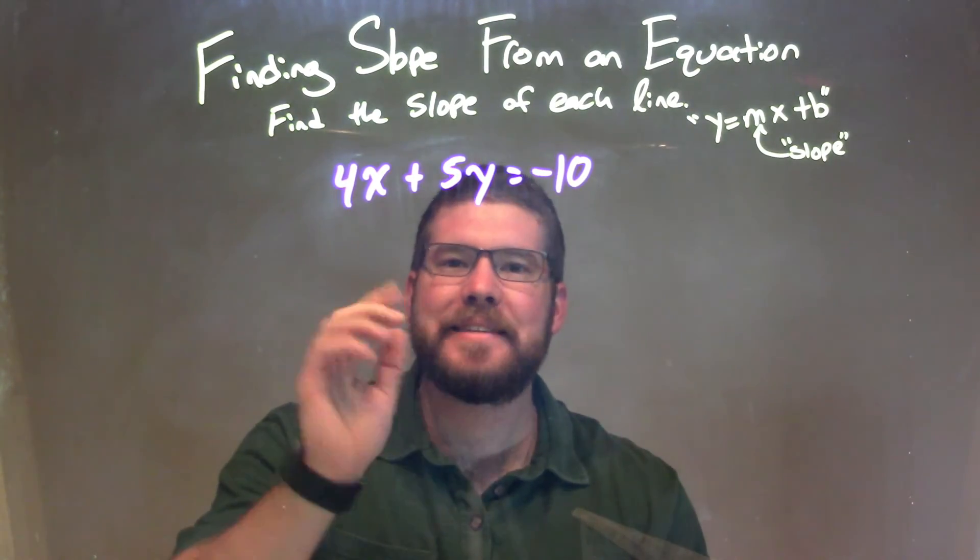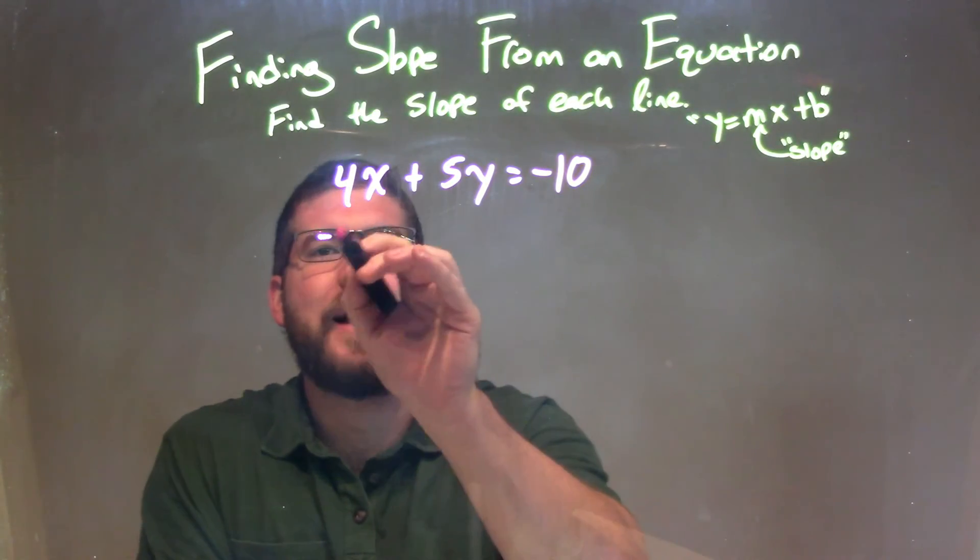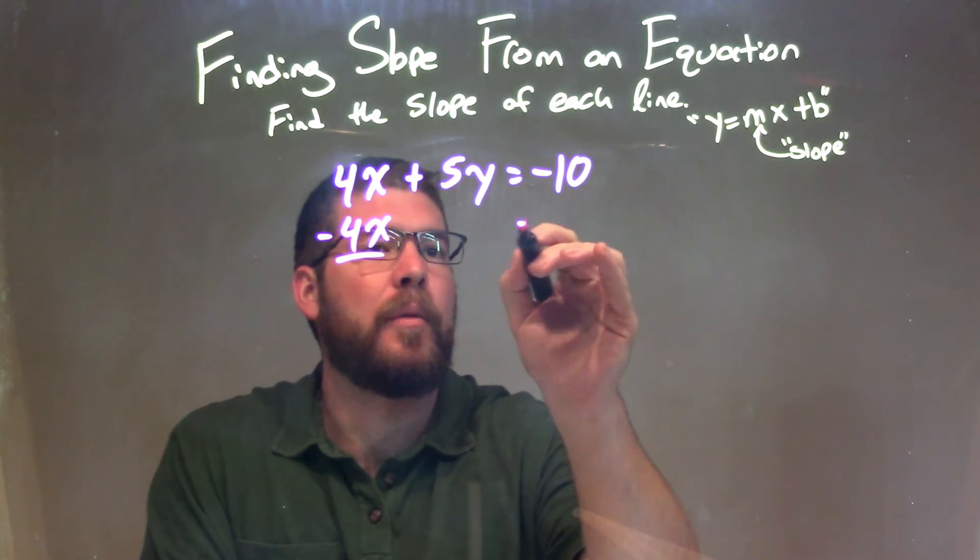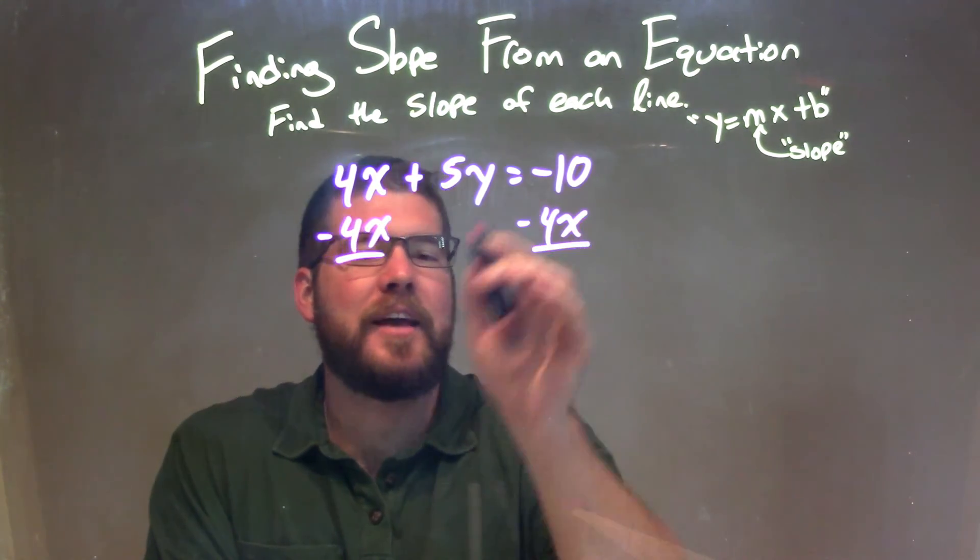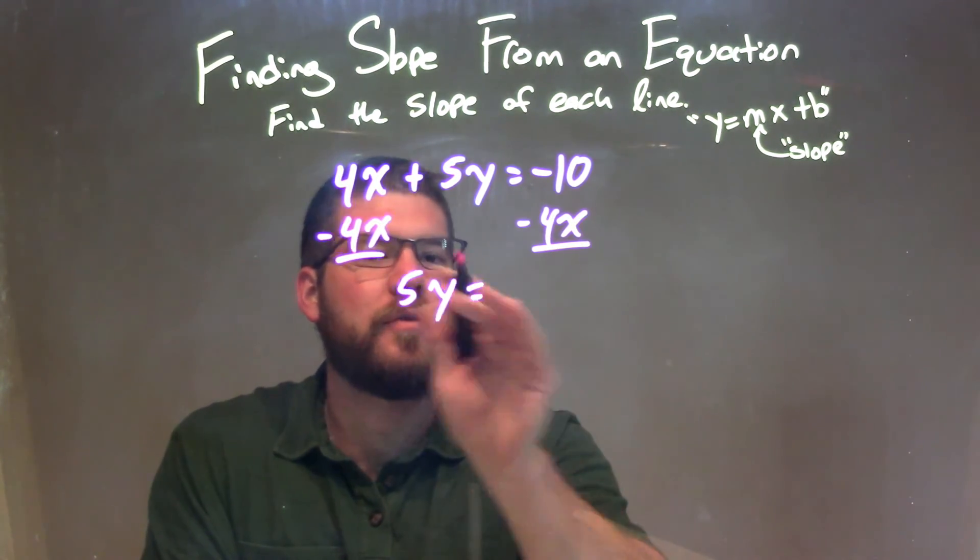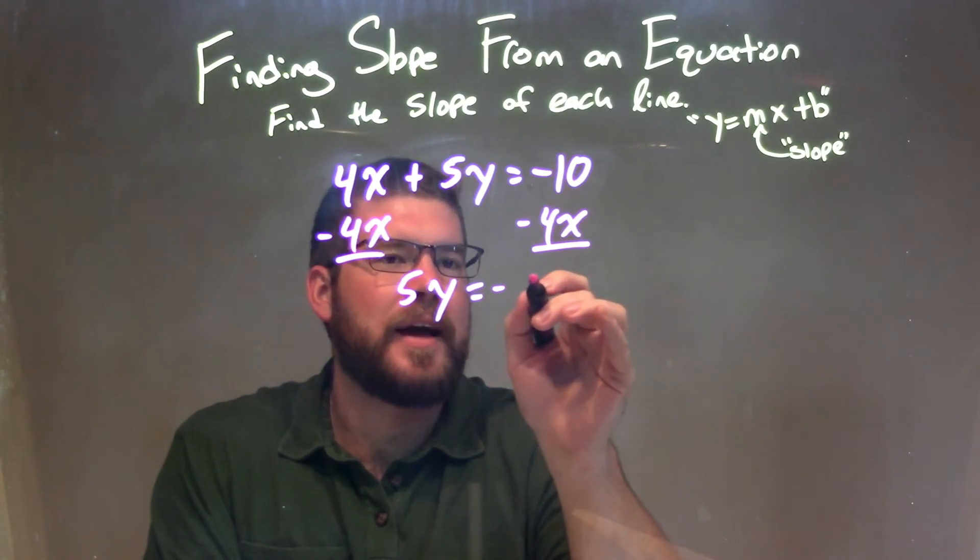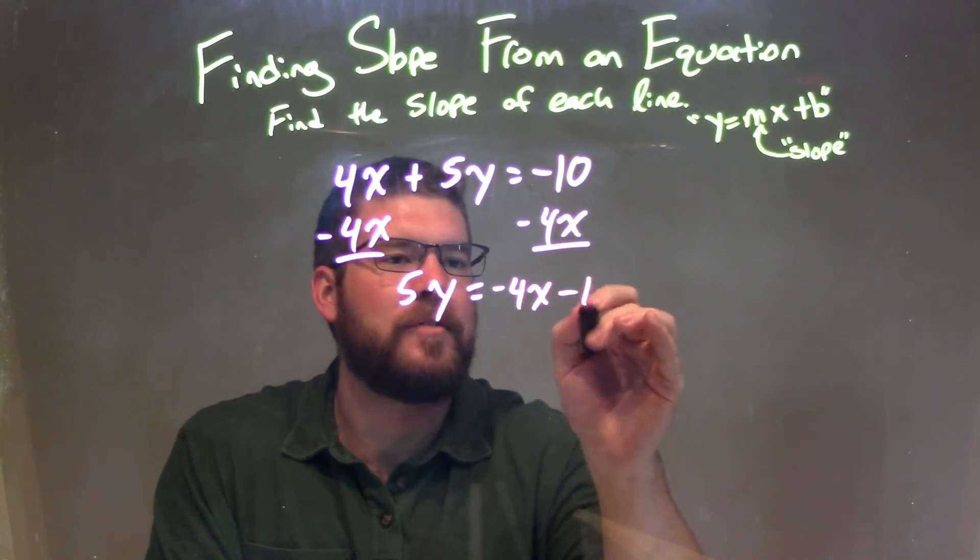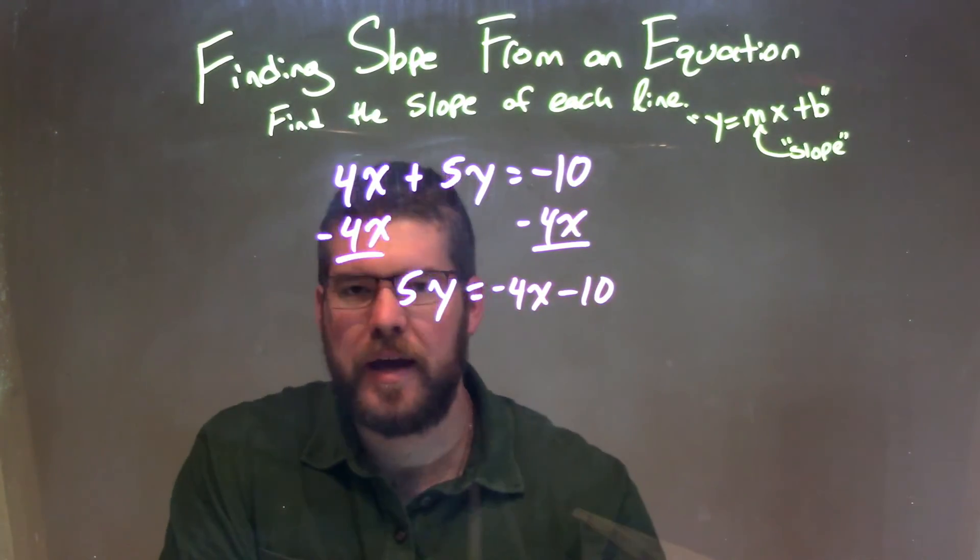I need to isolate y by itself. So to do that, I'm subtracting 4x from both sides. It gives me 5y by itself on the left, and let's put negative 4x first: negative 4x minus 10. Not like terms, cannot combine them.